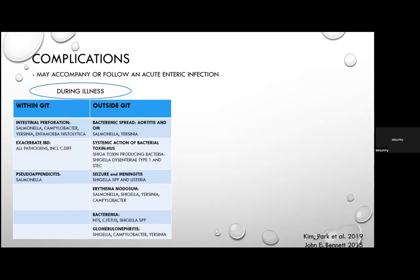Extra-GIT complications during illness: bacteraemic spread causing aortitis and osteomyelitis — mainly Salmonella and Yersinia; haemolytic uraemic syndrome from Shiga toxin-producing bacteria including Shigella dysenteriae type 1 and STEC; seizures and meningitis from Shigella and Listeria; erythema nodosum from Salmonella, Shigella, Yersinia, and Campylobacter; bacteraemia from non-typhoidal Salmonella, Clostridium fetus, and Shigella; and glomerulonephritis associated with Shigella, Campylobacter, and Yersinia.